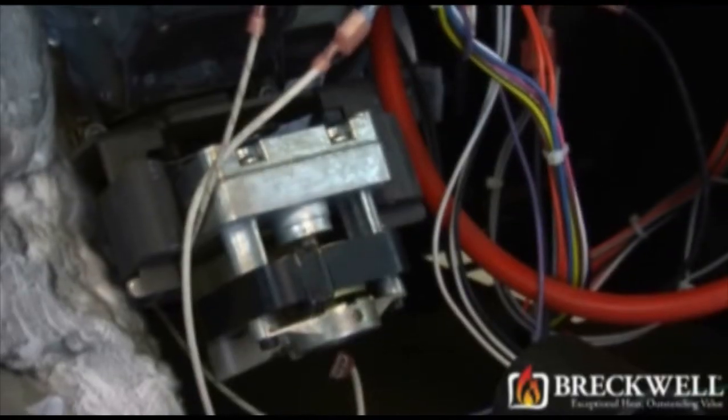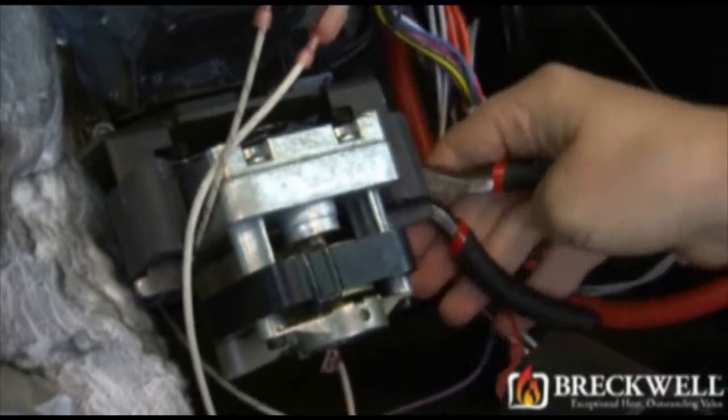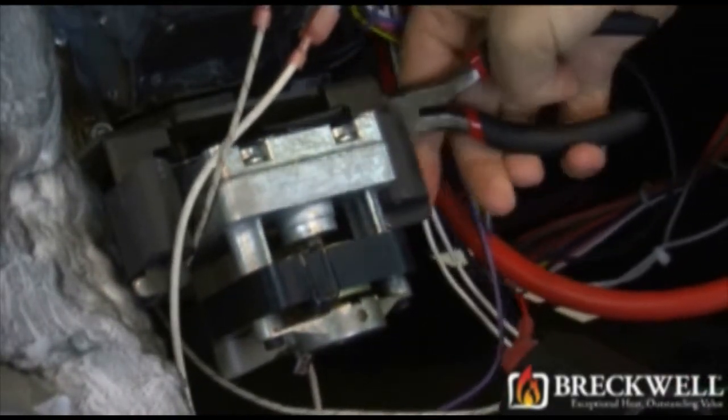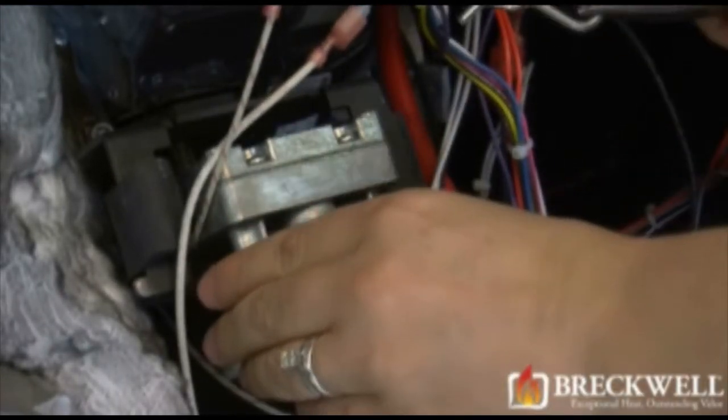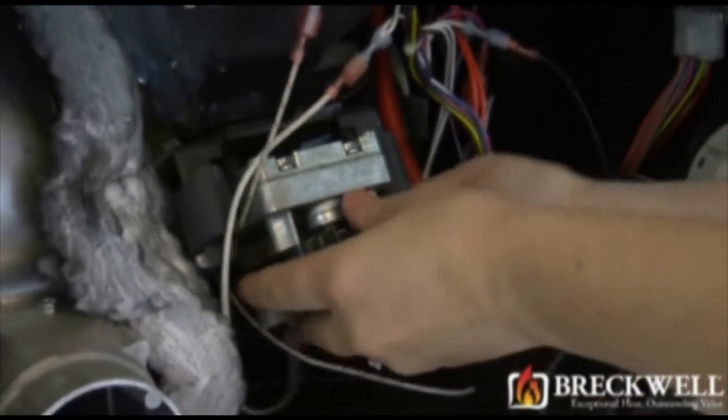Next, locate and unplug the two wire leads coming from the auger motor that attach to the wiring harness. Then locate the retainer clip holding the auger motor to the auger drive shaft.